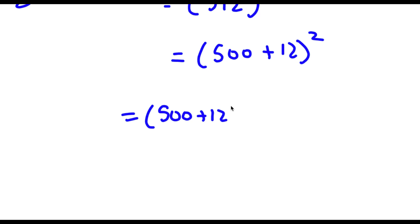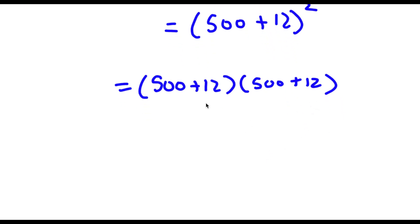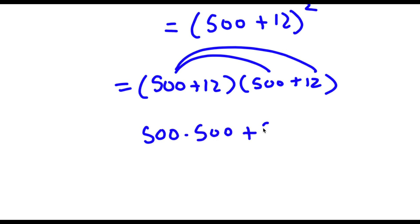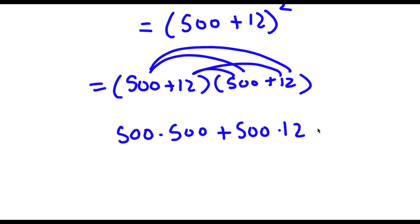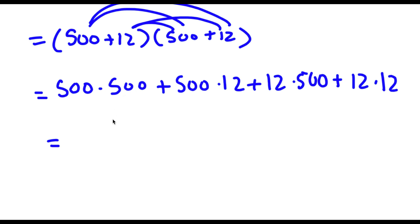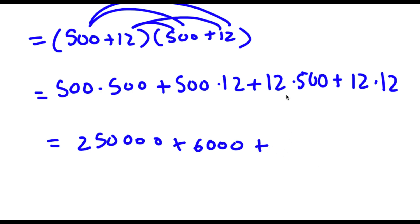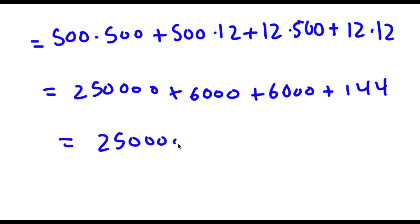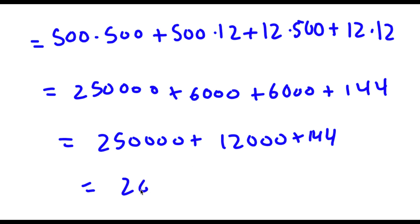512 squared is the same as 500 plus 12, the whole quantity squared, which equals 500 plus 12 times 500 plus 12. Distributing 500 gives 500 times 500 plus 500 times 12. Distributing 12 gives 12 times 500 plus 12 times 12. So I have 250,000 plus 6,000 plus 6,000 plus 144. That gives 250,000 plus 12,000 plus 144, which equals 262,144. So the final answer is 262,144.